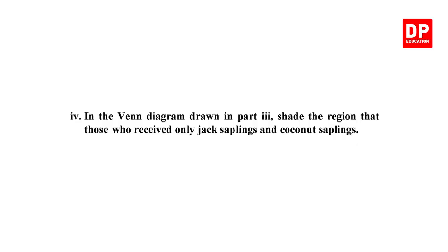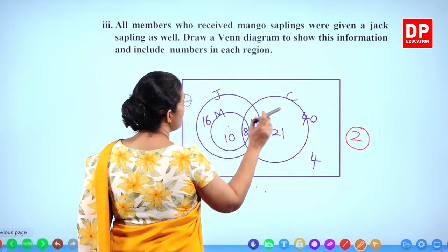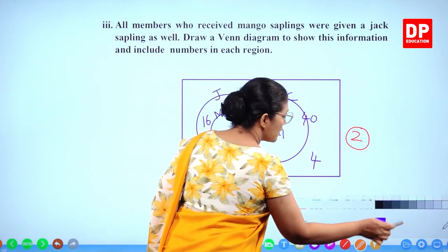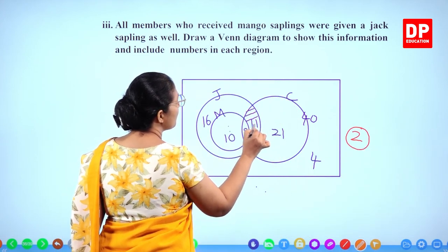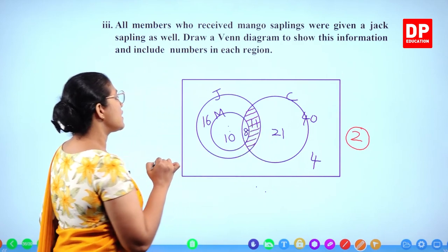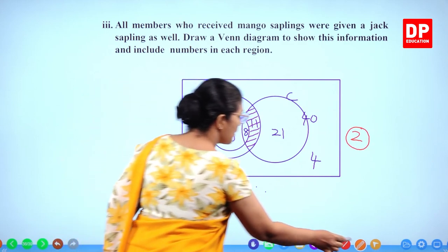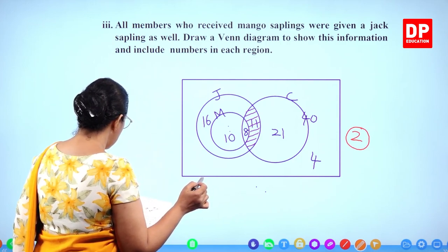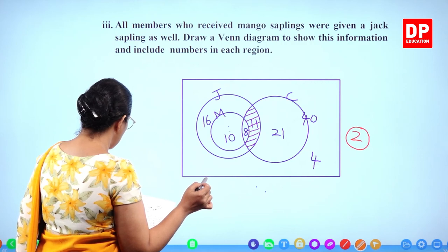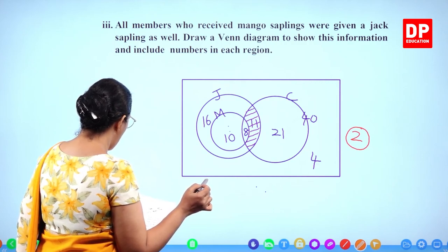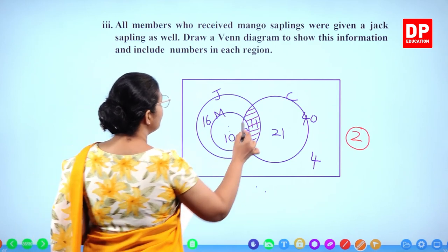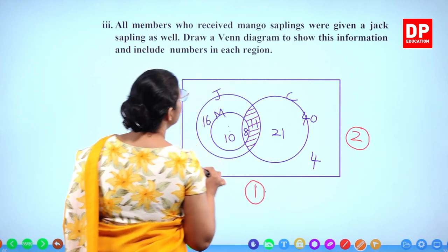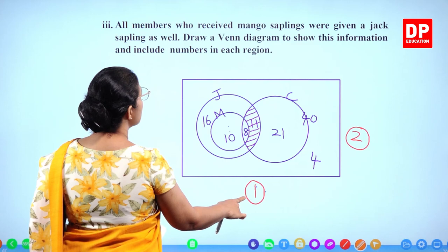Final part: in the Venn diagram from part 3, shade the region representing those who received only Jack saplings and coconut saplings (without mango). That region is the Jack-coconut overlap area. You get 1 mark for shading correctly.